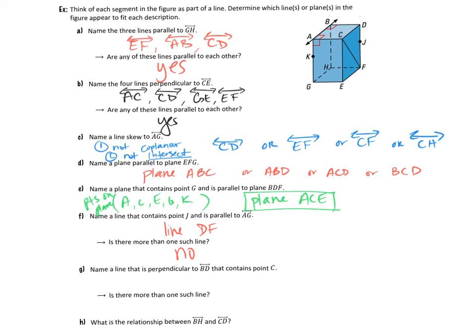Part G asks us to name a line perpendicular to line BD that contains point C. Perpendicular lines meet at a 90-degree angle. From C, drawing a 90-degree angle to the line intersects at point D, giving us line CD — also written with the perpendicular symbol. The second part asks if there is more than one such line. Because it must intersect at 90 degrees at a specific point, there is only one direction that line can go. So the answer is no.